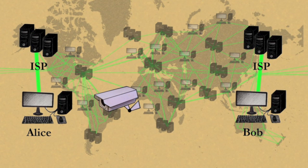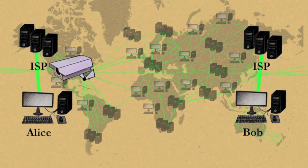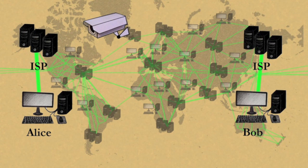Alice and Bob can be spied on with software placed on their computers. Their ISPs can cut off all access to the Internet, or certain parts of the Internet. For example, some governments restrict access to foreign websites.